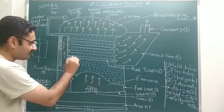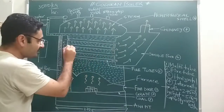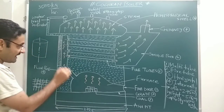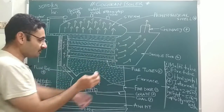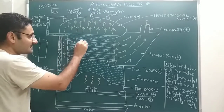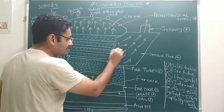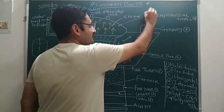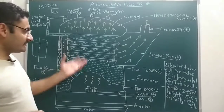Due to the combustion of coal, hot flue gases are produced. Those hot flue gases travel through the flue pipe, which is connected to the fire tubes. The fire tubes are surrounded by water, and inside the tubes, the hot flue gases are present. The flue gases enter the fire tubes, which are surrounded by water, and the flue gases reject heat to the water, converting it into hot water. The flue gases then pass through the smoke box, which is connected to the chimney, and are released into the atmosphere.